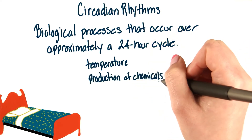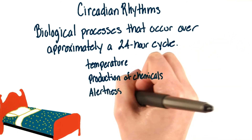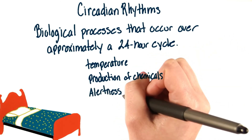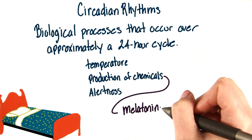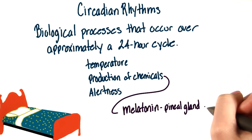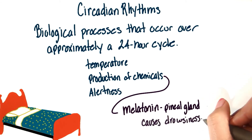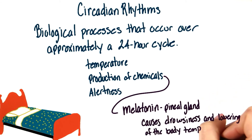Production of certain chemicals, such as melatonin, will change with our alertness throughout the day. Melatonin is produced in the pineal gland, and it's important for sleep. It causes drowsiness and lowering of the body temperature.